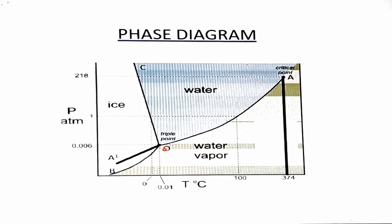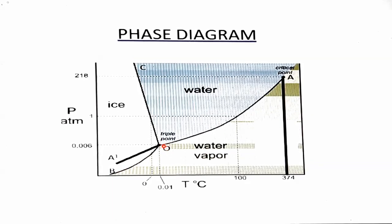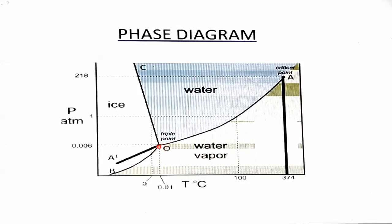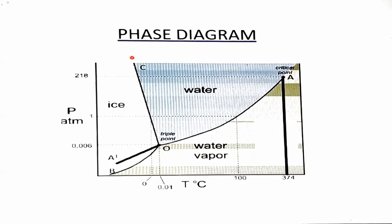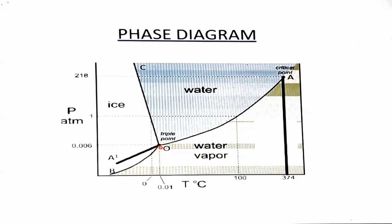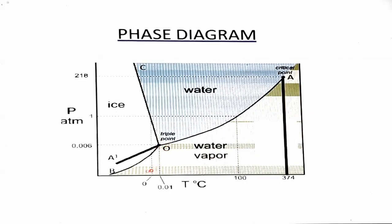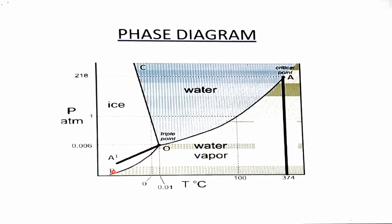The OC curve is the second curve. At this curve, the solid phase of water and its liquid phase are in equilibrium. Since solid is converting into liquid, this is called either melting or the fusion curve.